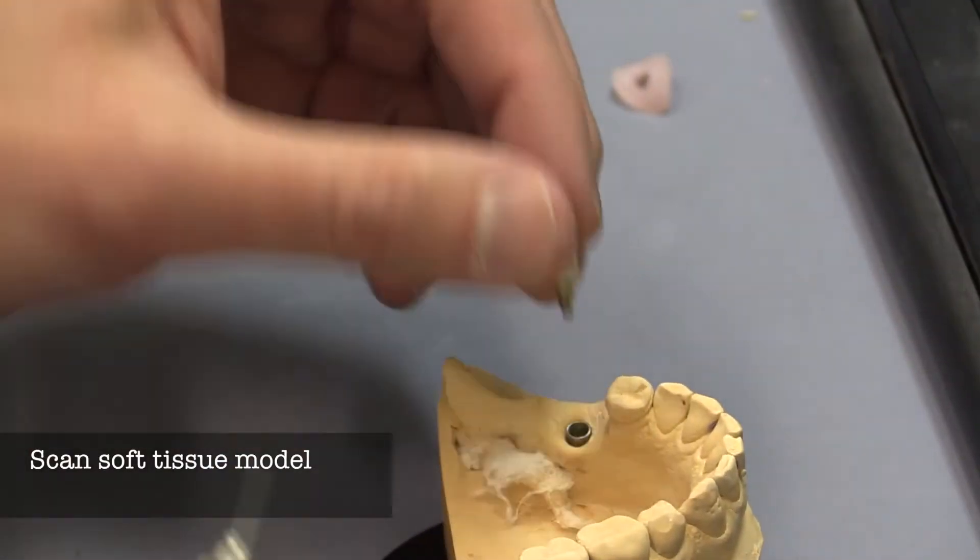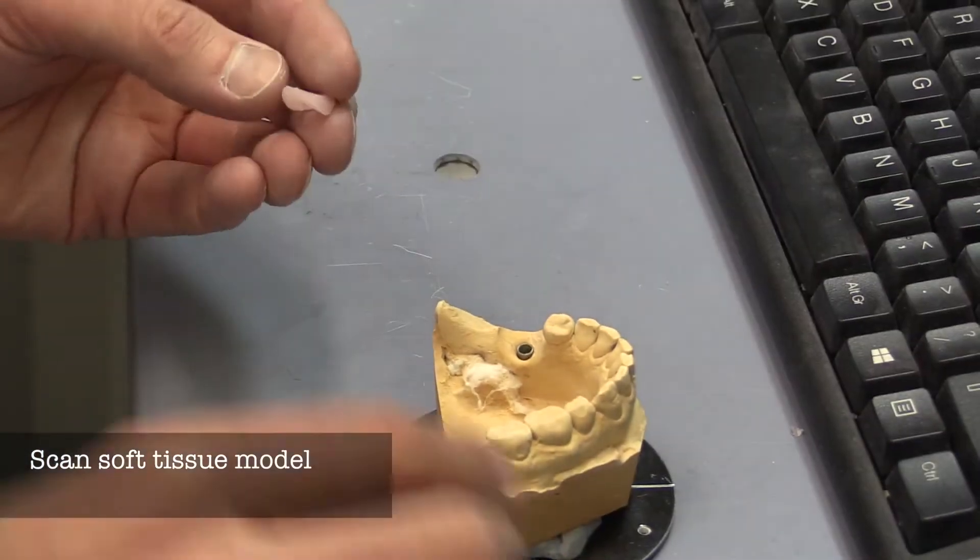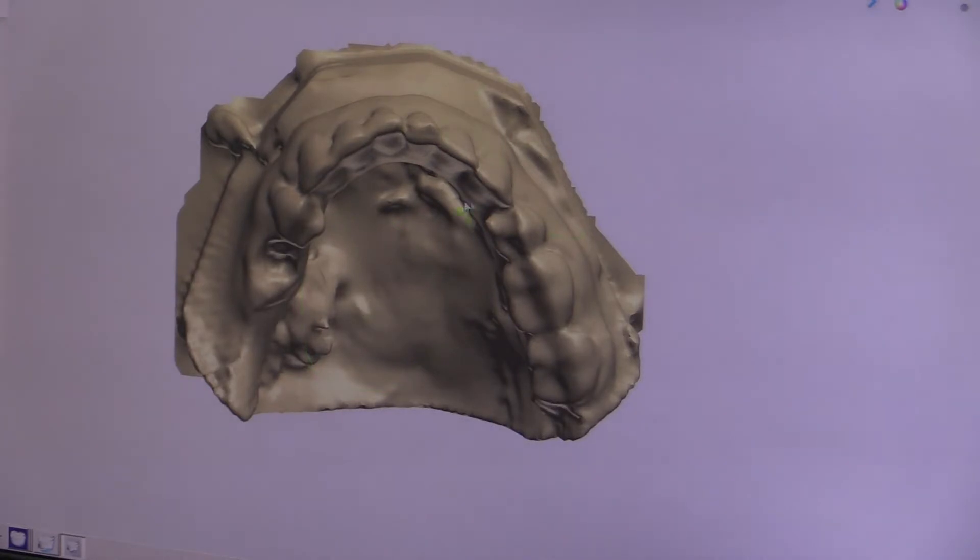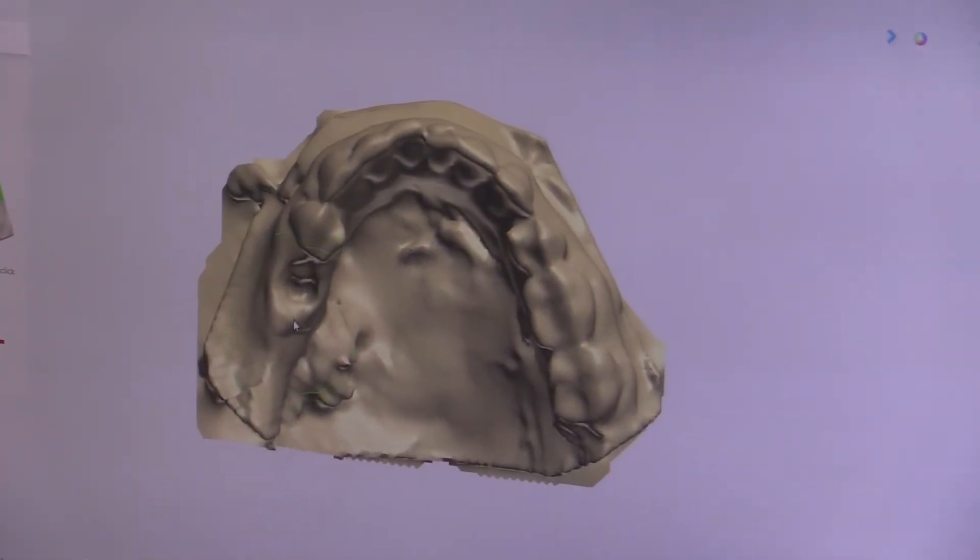As we take this off the model, we can start and scan the soft tissue as well. We want to have a scan of that so we can start to see the three-dimensional nature of this implant.